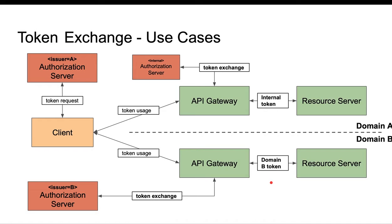On a less abstract view, a similar token that is passed in could be exchanged for a JSON Web Token that is then used internally. So the main idea really is that a client is able to use a given token and use a different token against a certain system. An access token could be exchanged for a new access token, or for a similar token if all required attributes are available.